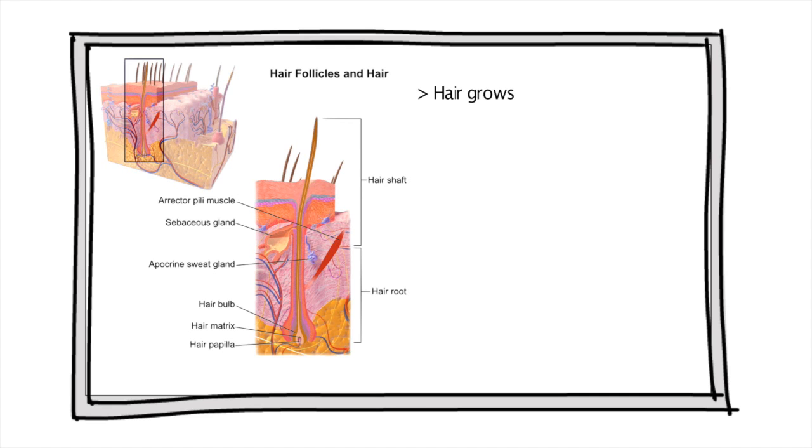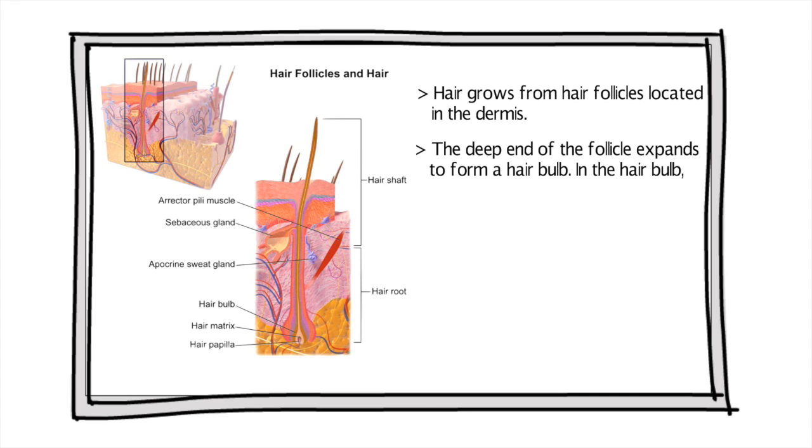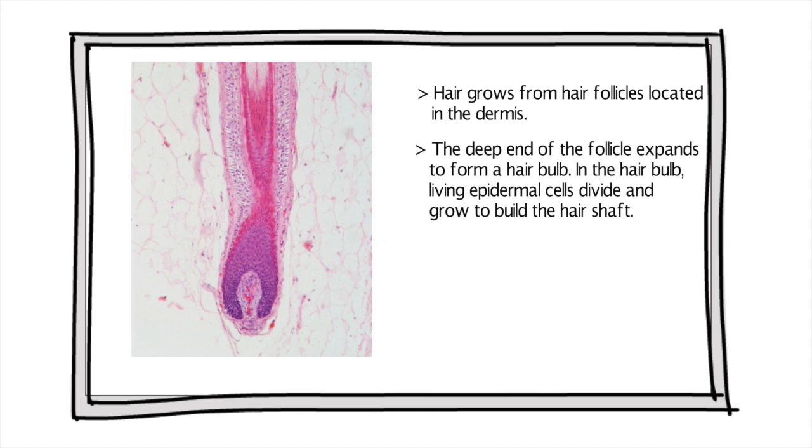The method is based on simple anatomical facts. Hair grows from hair follicles located in the dermis. The deep end of the follicle expands to form a hair bulb. In the hair bulb, living epidermal cells divide and grow to build the hair shaft.